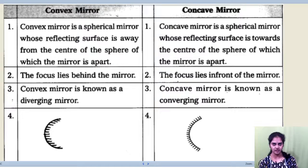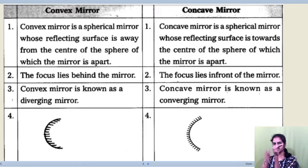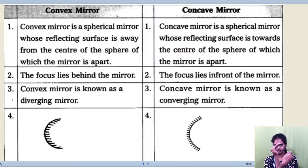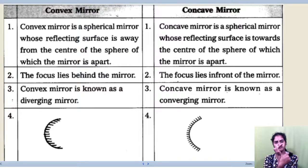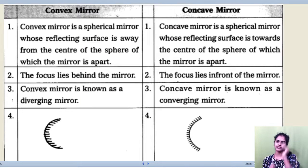The focus lies behind the mirror for a convex mirror. Focus is the point where all rays parallel to the principal axis meet. So for a convex mirror, rays hit the mirror and the focus lies behind it, along with the center of curvature. Whereas in a concave mirror, the focus lies in front of the mirror, and the center also lies in front towards the mirror.